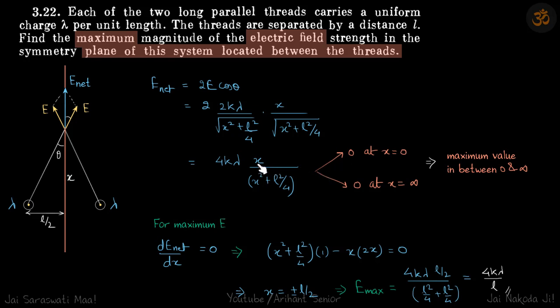You can see here, if you put x equal to 0 at this point, the field is obviously 0. Due to this it will be here, due to this it will be here. The field is 0. And at infinity, because the charges will be too far, the field is also 0.